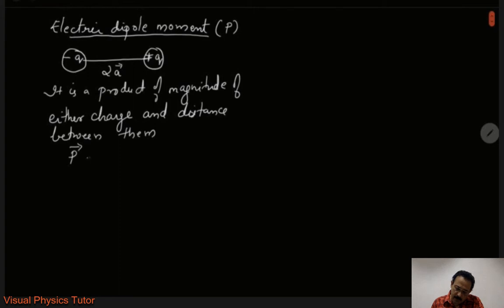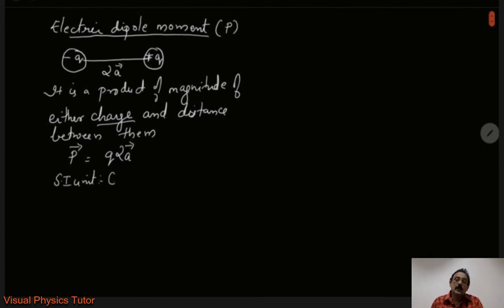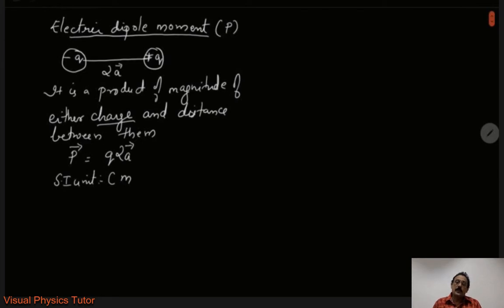P vector is a product of two quantities: the magnitude of either charge, written as Q, and the distance separating the two charges, which from the diagram is 2A vector. So the formula is: P vector = Q × 2A vector. The SI unit for electric dipole moment is coulomb meter, since Q is in coulombs and 2A is in meters.